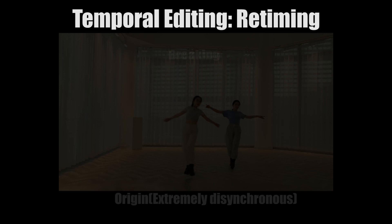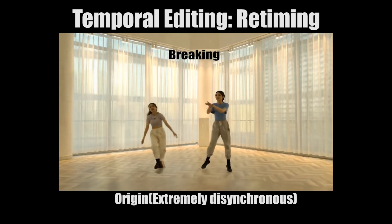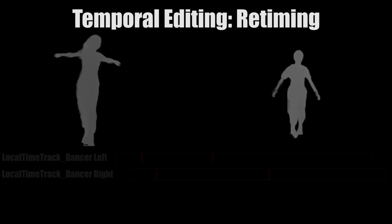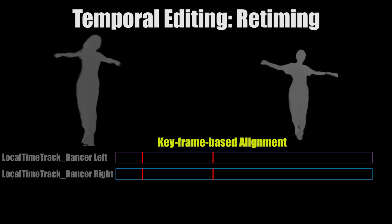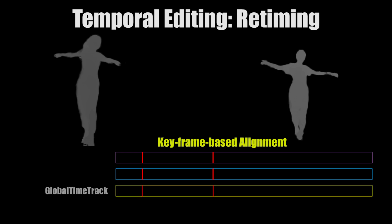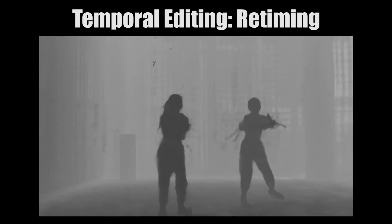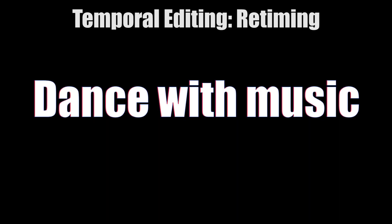On the temporal dimension, we can adjust the timing of individual layers. For example, if the two performers are out of sync, we can adjust the corresponding layer to synchronize their movements. Let's see how they synchronize with background music.